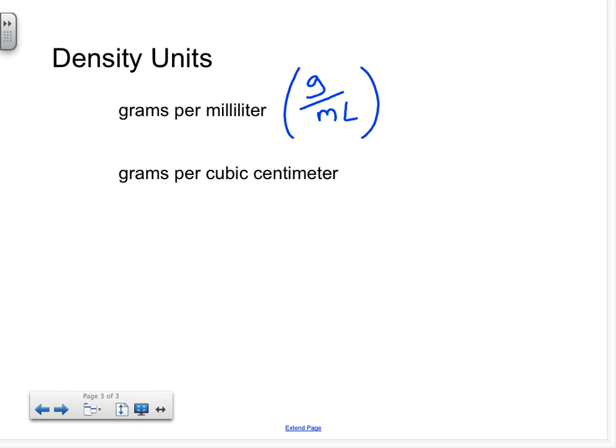Or if you're doing density of a solid, you'll take the units for mass, grams, and you'll divide it by cubic centimeters, which are the units for volume of a solid. So please write down both of these units in your notes.